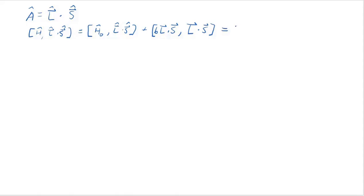Now this first commutator is H0 commuting with L dot S. Well, H0, the unperturbed Hamiltonian, commutes with all components of L and S. So you can expand it out. Maybe you should, but you will definitely get zero.